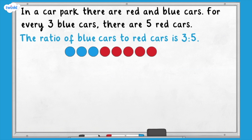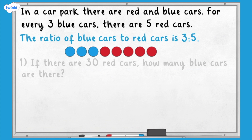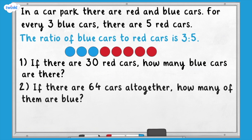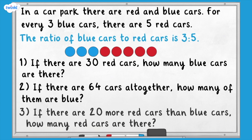Now use this ratio to answer the questions. Question one: if there are 30 red cars, how many blue cars are there? Question two: if there are 64 cars all together, how many of them are blue? Question three: if there are 20 more red cars than blue cars, how many red cars are there? Pause here and have a go.